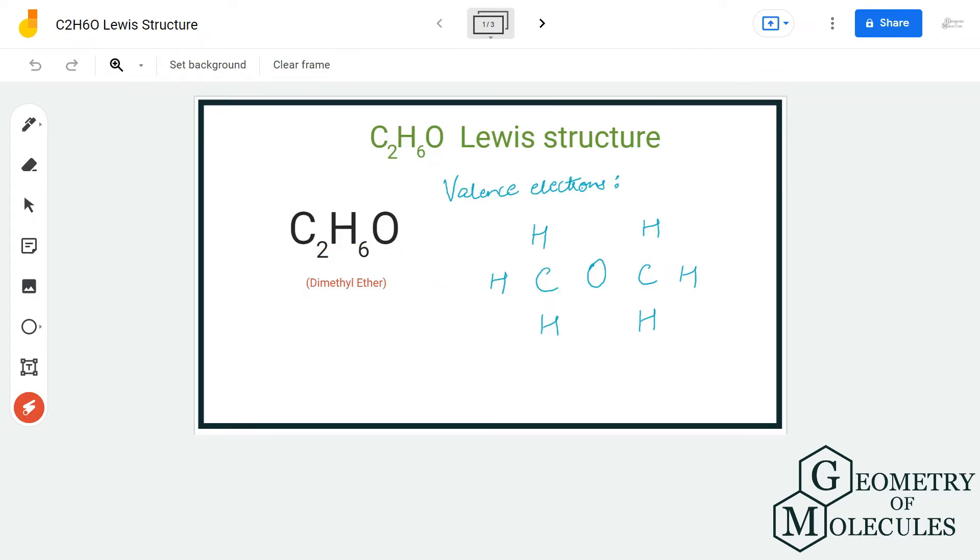To start with this Lewis structure, we are first going to calculate the total number of valence electrons. Here we have two carbon atoms which have four valence electrons each, we have six hydrogen atoms and each hydrogen atom has one valence electron, and we have six valence electrons from the oxygen atom. So in total we have 6 plus 6 plus 8, that is 20 valence electrons.